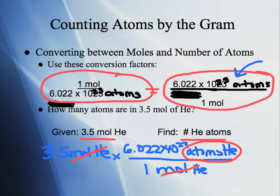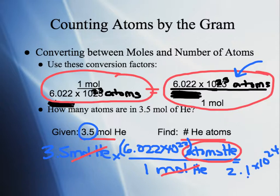When we plug this into our calculator — always put large numbers with exponents in parentheses so order of operations is done correctly — we end up with 2.1 times 10 to the 24th atoms of Helium. Looking at sig figs, we start with two sig figs in 3.5, so we have two sig figs in our answer. We can also go the other way, from atoms to moles, by using the other conversion factor.